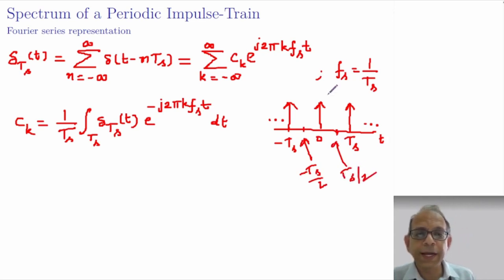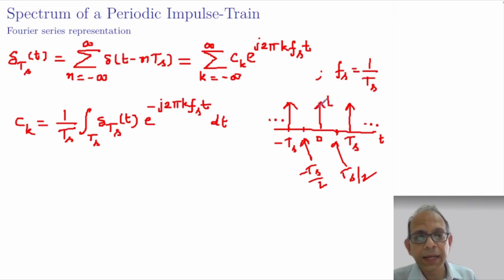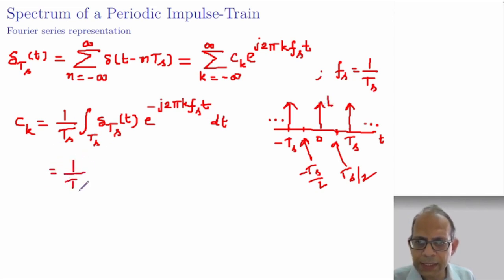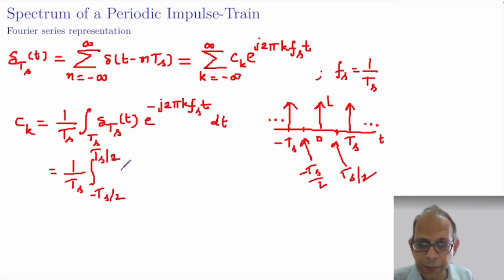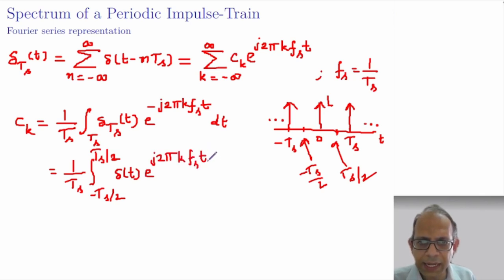When we do that, in this interval we just have one impulse, which is nothing but δ(t). So this expression can then be written as (1/Ts) times the integration from −Ts/2 to Ts/2 of δ(t) times e^(−j2πkFs·t) dt.